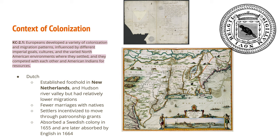The document shown in the top left is the deed of sale for the island of Manhattan. The island of Manhattan was exchanged between the Dutch and Native Americans for something that would be roughly around $1,000 today.